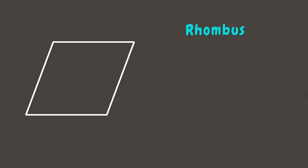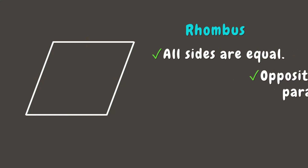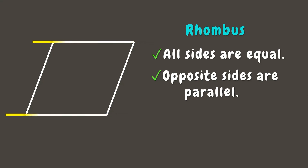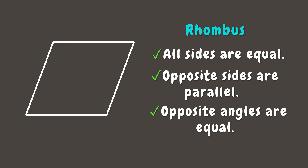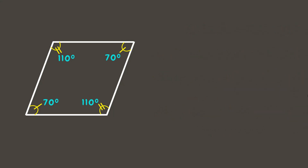Can you guess what quadrilateral this is? It is a rhombus. A rhombus, like a square, has four equal sides and its opposite sides are also parallel. The only difference is that its angles are not right angles, but its opposite angles are equal. For example, if one angle is 70 degrees, its opposite angle will also be 70 degrees; if another is 110 degrees, the opposite angle will be 110 degrees. But if we add all four angles, they still sum up to 360 degrees.